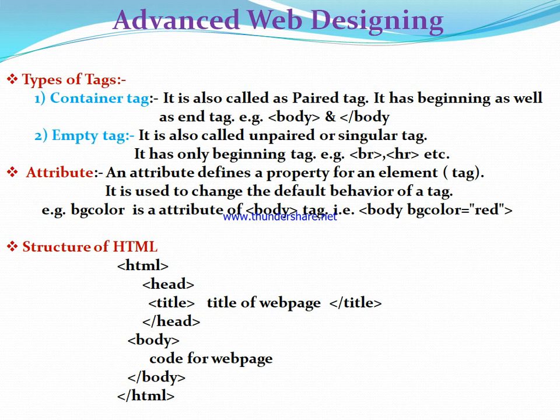The next point is attribute. Each and every tag has its own attributes. An attribute defines a property for an element — it is used to change the default behavior of a tag. For example, the bgcolor attribute is an attribute of the body tag. bgcolor stands for background color and the default background color of the web page is white. If you want to change that white background to another color, you must specify the bgcolor attribute of the body tag in the code, for example: body bgcolor=red. An attribute is additional property supplied to a tag to change its default behavior.